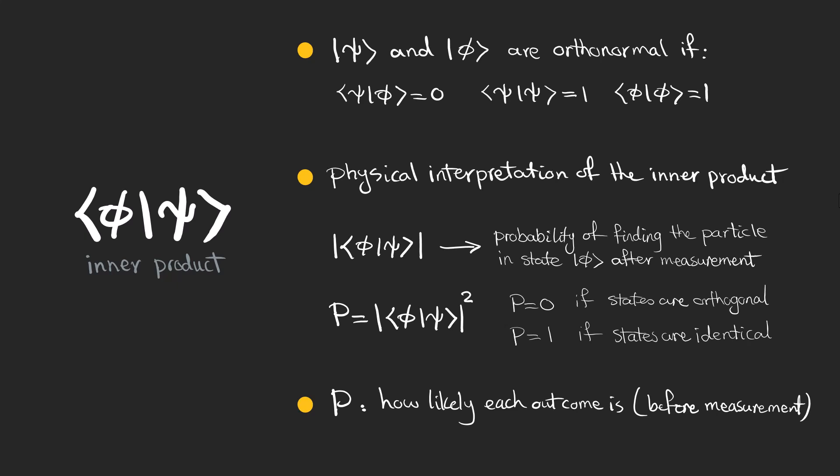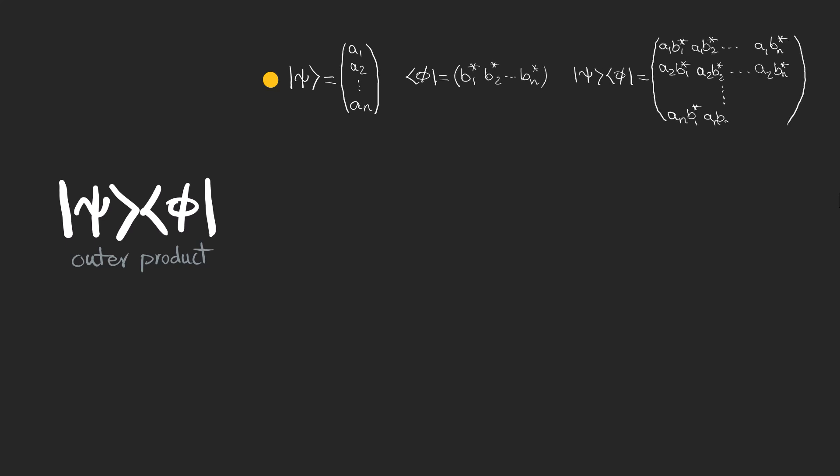There is another kind of product called the outer product that combines a ket and a bra to form a matrix or an operator. As you can see if we have two n-dimensional vectors, the outer product will be an n-by-n matrix. The outer product creates an operator that can act on another quantum state, and the result is a new state vector proportional to psi, which is the ket in our outer product.